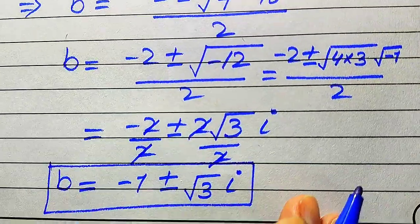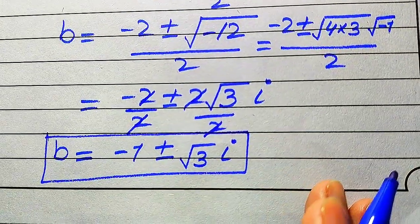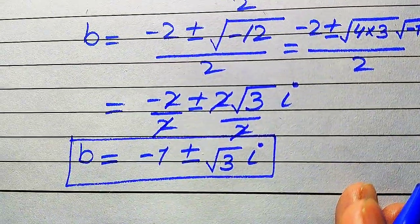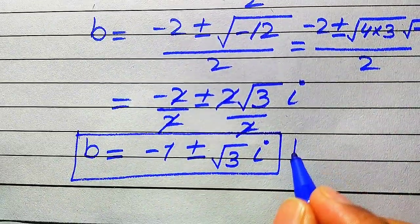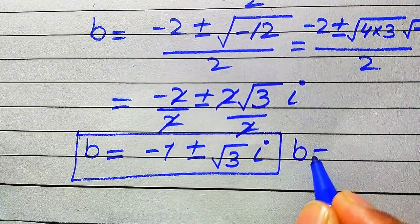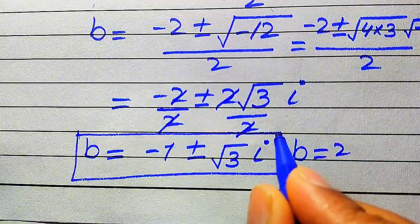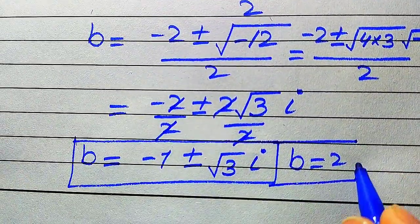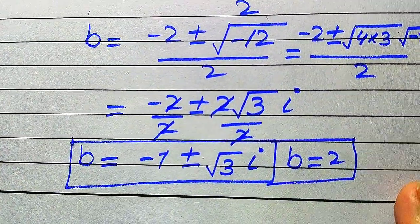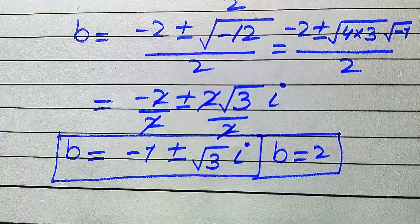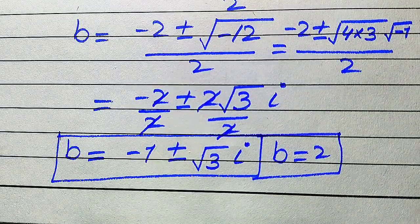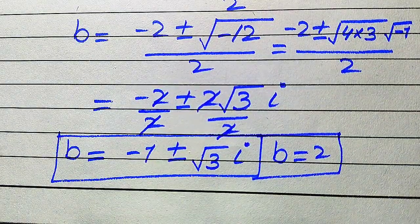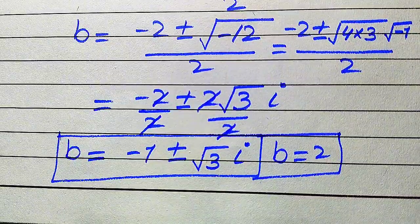So these are the other two complex roots of the given equation. Finally, the three roots of the given equation are: b equals 2 (the one real root), and b equals minus 1 plus or minus i times square root of 3 (the two complex roots). These are the three final roots, and this is the final answer. Thank you so much for watching this video, please subscribe to my channel for more exciting videos.